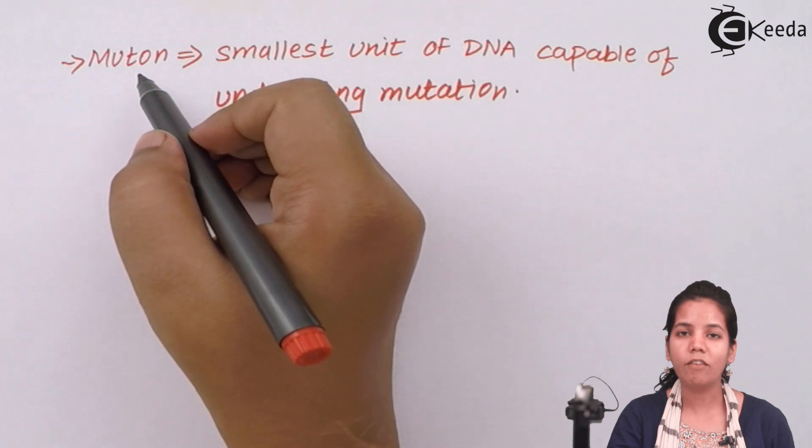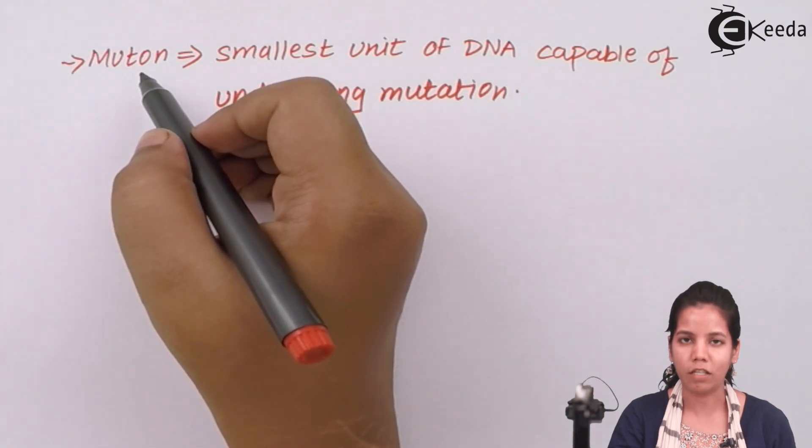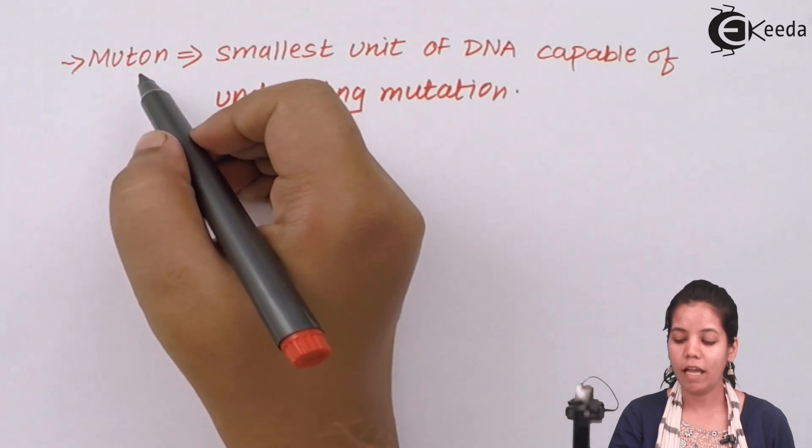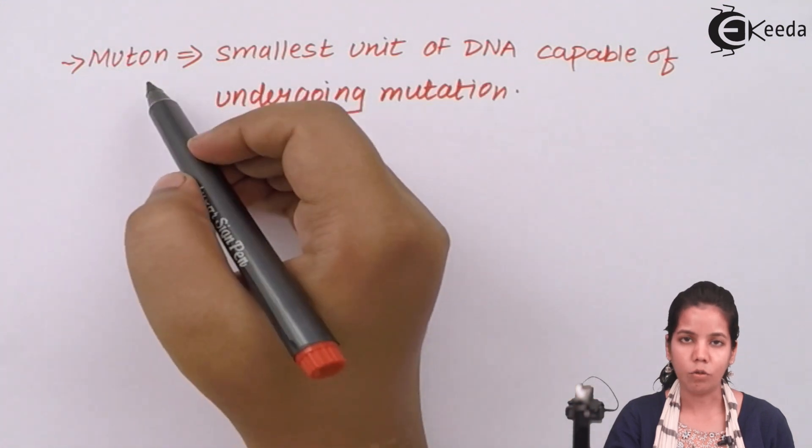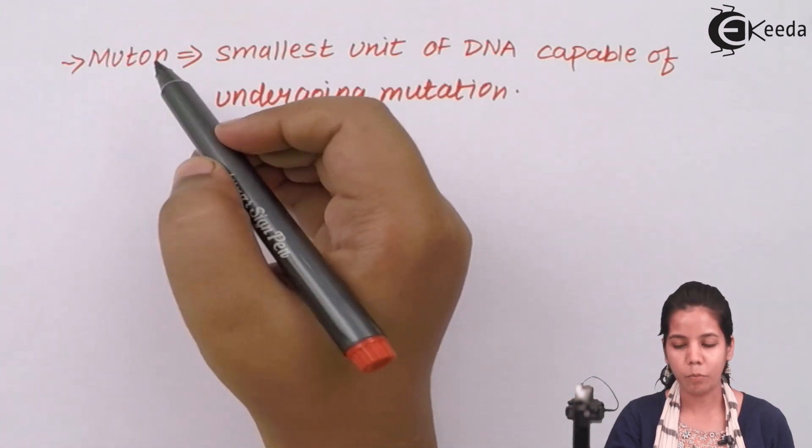Now not necessary that every mutation of a gene is a positive change. Some mutations are also negative or they can have disorders. Whenever there is mutation undergoing for a gene, those genes can be termed as mutons.